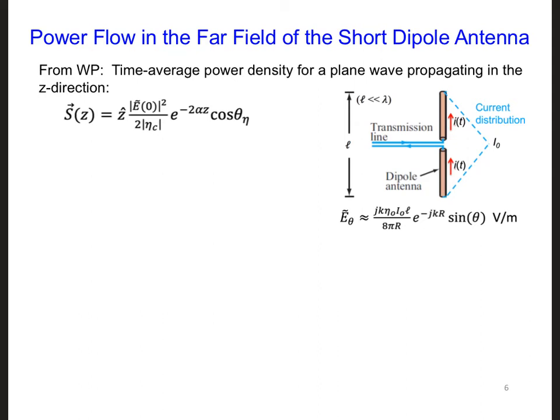In the far field of the antenna, the electromagnetic wave looks locally like a plane wave. So this means we can calculate the power flow away from the antenna using the time average power density equation for a plane wave that we came up with in the wave propagation section of this course.